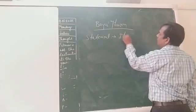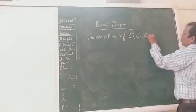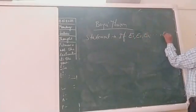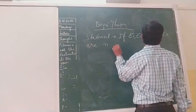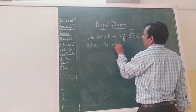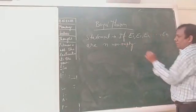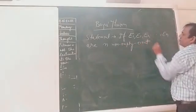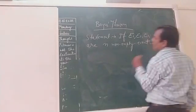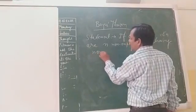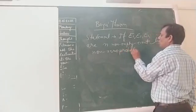If E1, E2, E3, dot dot dot En are non-empty events in non-empty events having non-zero probabilities, non-zero probabilities.